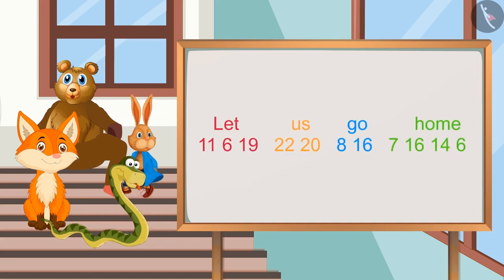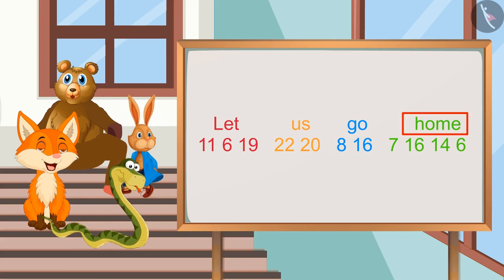Yes, this is the order of Bholu. Let will be 11, 6 and 19. Us will be 22 and 20. Go will be 8 and 16. Home will be 7, 16, 14 and 6.